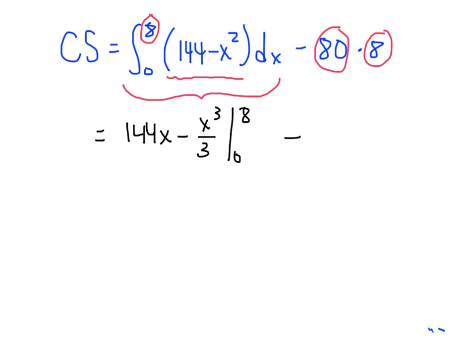And don't forget, we're going to subtract off 640. 8 times 80 is 640. So when you plug this in, you're going to get 144 times 8 minus 8 cubed over 3. And then when you plug in 0, of course you get 0 minus 0. And then don't forget the minus 640.